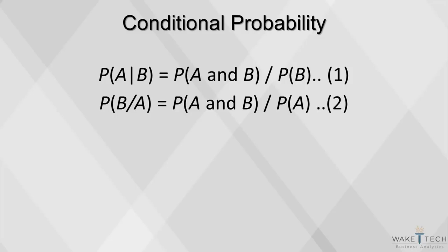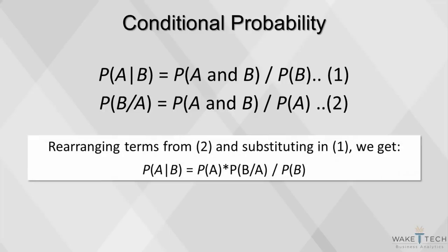Sometimes the probability of one event will affect another. These are called dependent events, and their probabilities are called conditional. This is the formula for conditional probability. The conditional probability of a, given that b has already occurred, is equal to the joint probability of both events occurring together, divided by the probability of b occurring without regard to whether a has occurred or not.